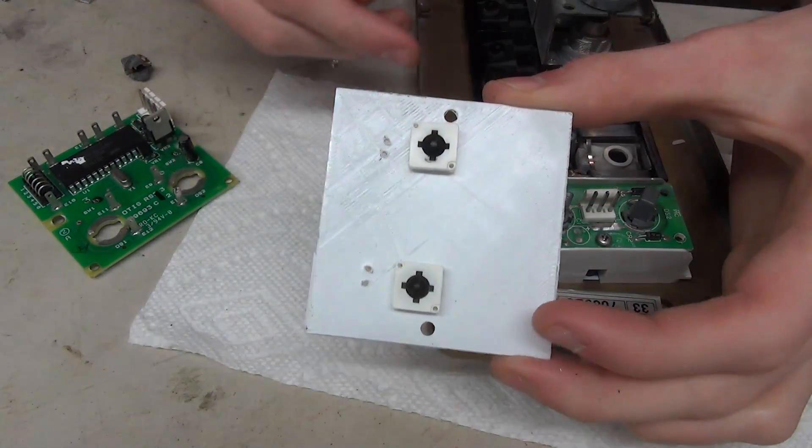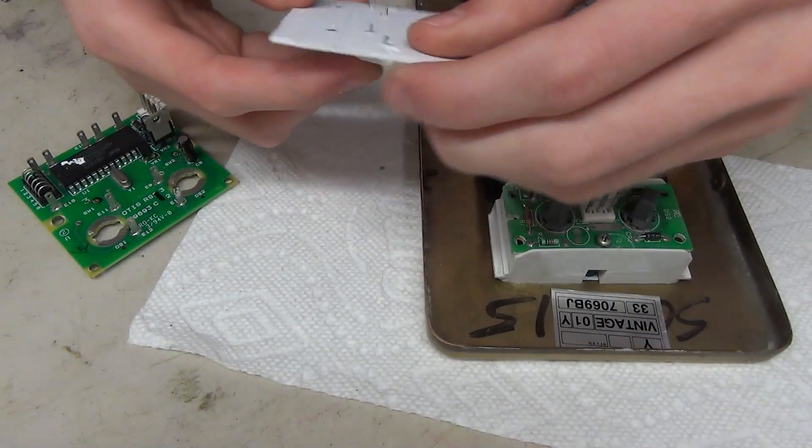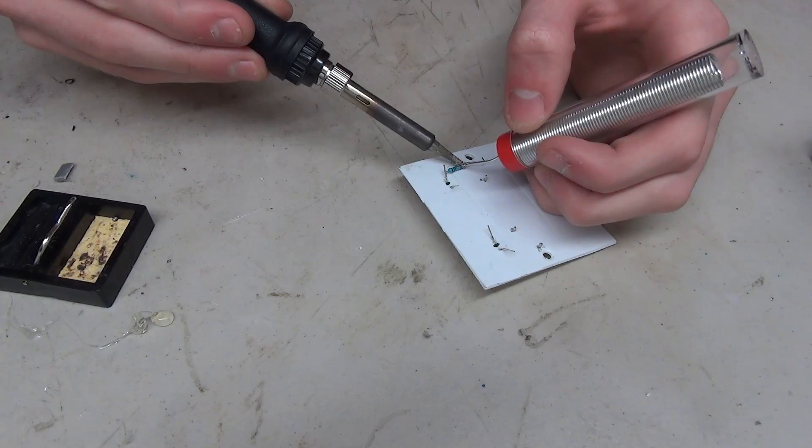Once that piece was done I verified that it fit on and screwed down, which it did. Then it was time to add the components, which were the two buttons, some LEDs, some resistors, and a little connector to put the battery on.